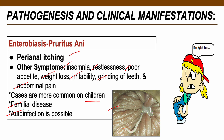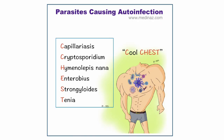Extraintestinal Enterobiasis is similar to Ascaris — erratic migration of adult worms to other organs causes inflammation, producing appendicitis or vaginitis. Parasites that cause auto-infection can be remembered with the acronym CULCHES: Capillariasis, Cryptosporidium (a protozoan), Hymenolepis nana (a tapeworm), Enterobius, Strongyloides, and Taenia (also a tapeworm).